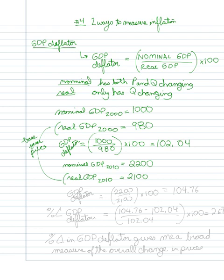So our GDP deflator would then equal 2200 over 2100 times 100, which gives me 104.76. Now I'm going to do the percentage change in the GDP deflators, so 104.76 minus 102.04 over 102.04 times 100. What I'm doing here is estimating the percentage change.